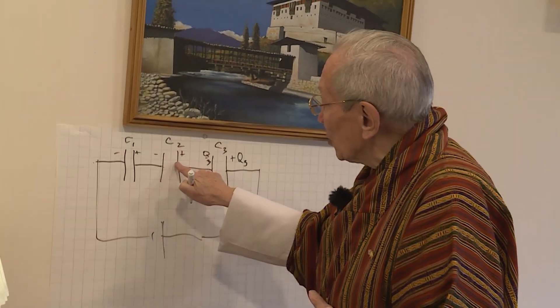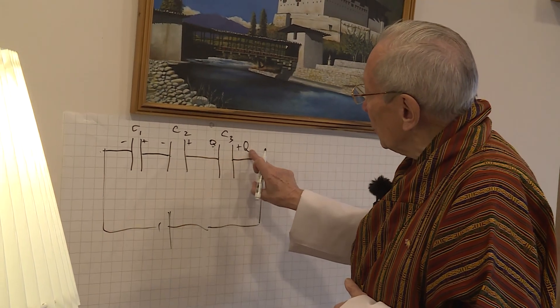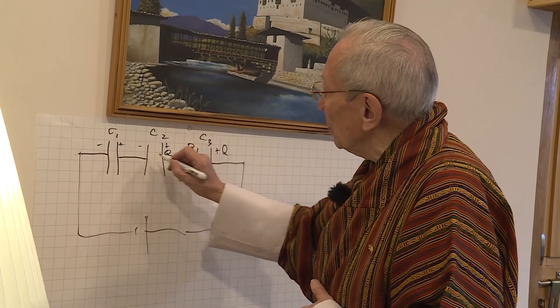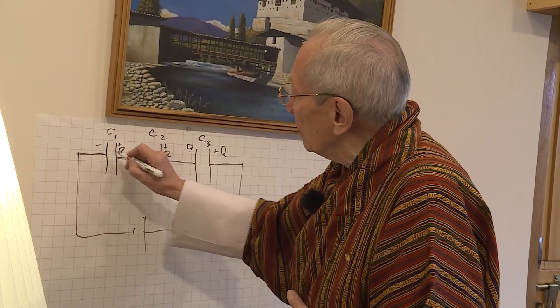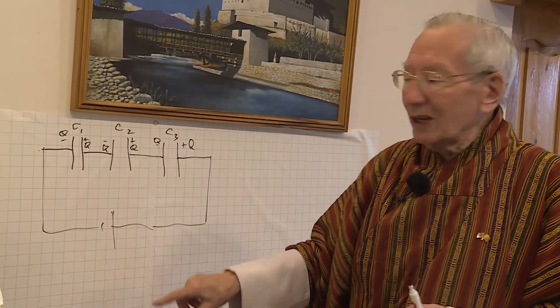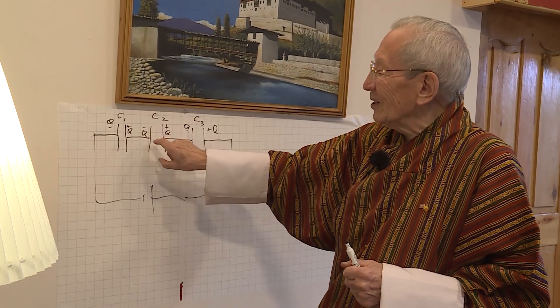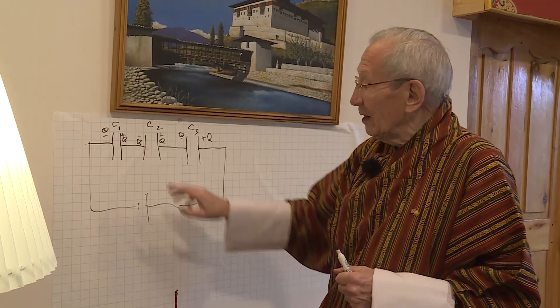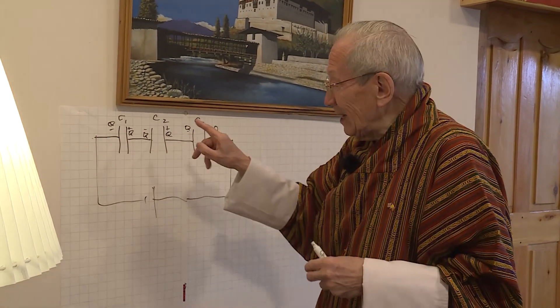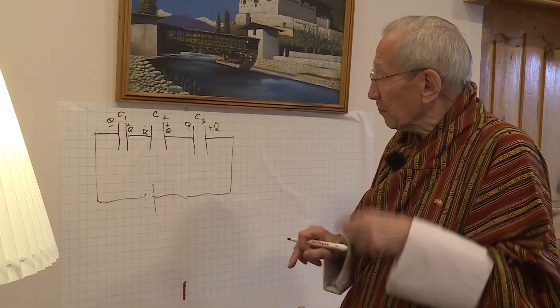So, the charge on this is the same as the charge on that. So, we've no need to say Q3, we can just say Q. So, the charge on that is plus Q, minus Q, plus Q, minus Q. I repeat, the charge on each capacitor is the same because the electrons have just gone from one to the other, from one to the other, from one to the other. In parallel, the charge on each capacitor was different. In series, the charge on each capacitor is the same.